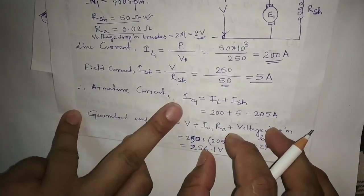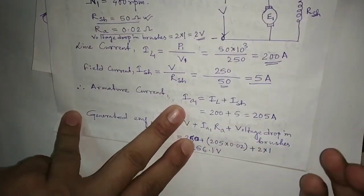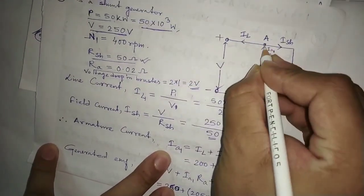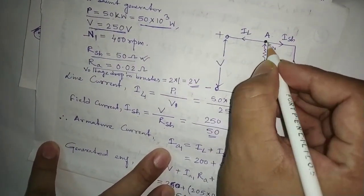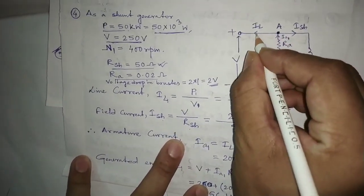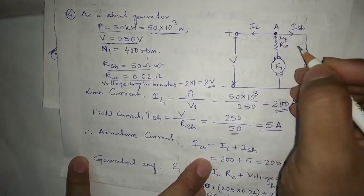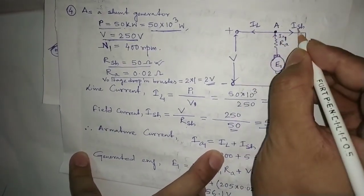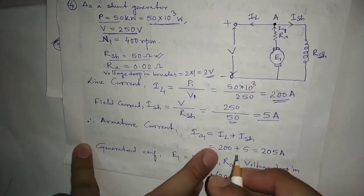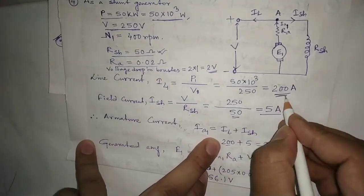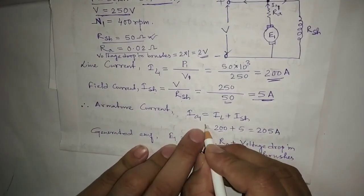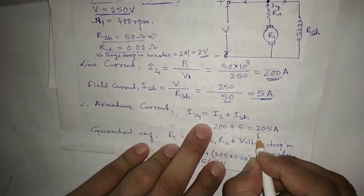The field current Ish comes out to 5 ampere. Now for the armature current, applying KCL at node A in the generator circuit: the incoming current Ia1 equals IL plus Ish — that is, incoming current equals outgoing currents. IL is 200 ampere and Ish is 5 ampere, so Ia1 equals 205 ampere.